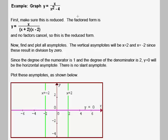In this example, we're going to graph the rational function y equals x over x squared minus 4. To do this, we're first going to find all of the horizontal and vertical asymptotes.